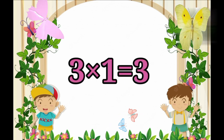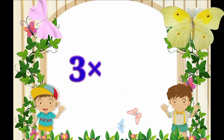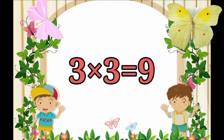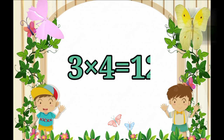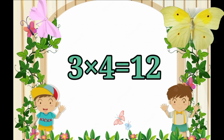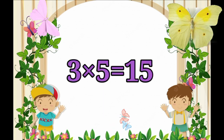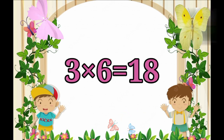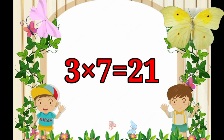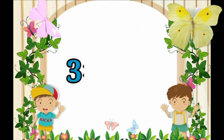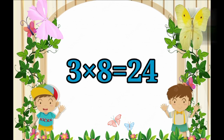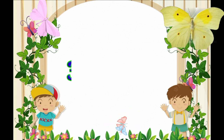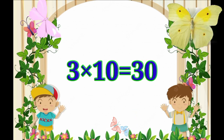Table of 3. 3×1=3, 3×2=6, 3×3=9, 3×4=12, 3×5=15, 3×6=18, 3×7=21, 3×8=24, 3×9=27, 3×10=30.